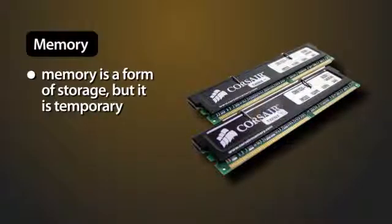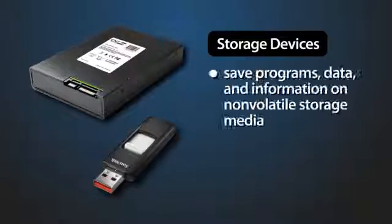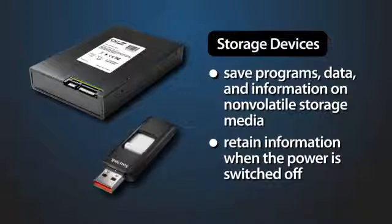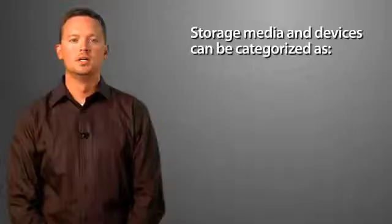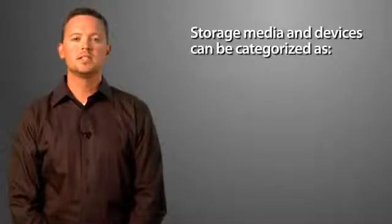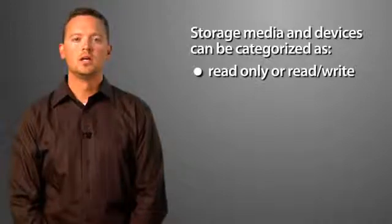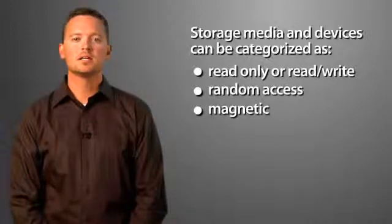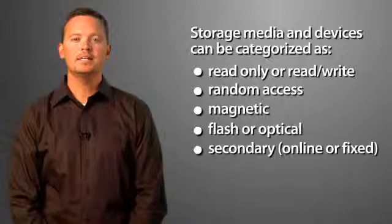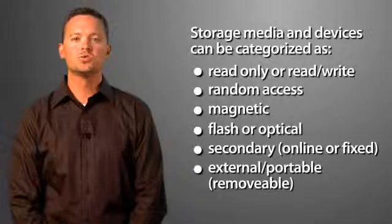Memory is a form of storage; however, it is temporary. Storage devices save programs, data, and information on non-volatile storage media. These types of media retain information even when the power is switched off. Storage media and devices can be categorized as read-only or read-write, random access, magnetic, flash or optical, and secondary — either online or fixed, external or portable.